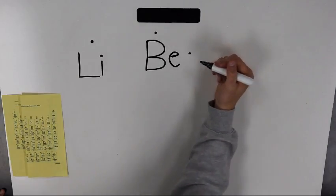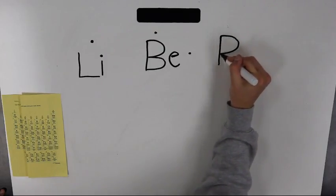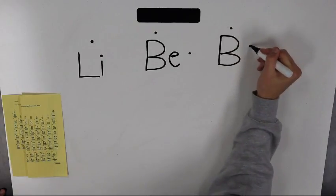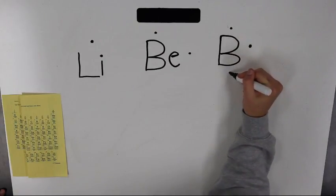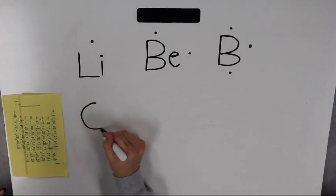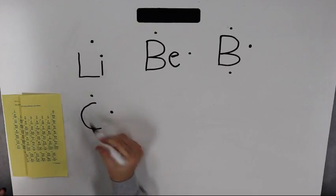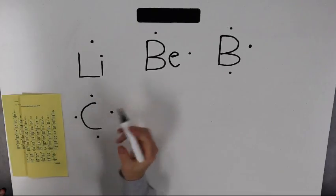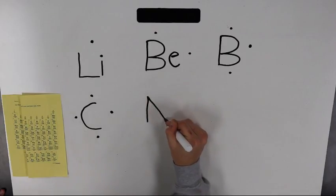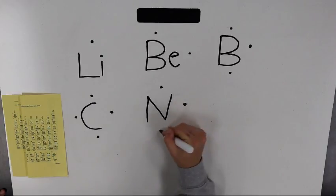Boron is in group 3A, so put three dots — now at the top, right, and bottom. Carbon is in group 4A, so now put four dots, one at each cardinal point. Now we get to nitrogen — it's in group 5A, so put five dots: one at each cardinal point and another at the top.